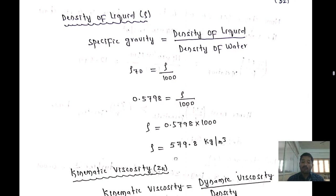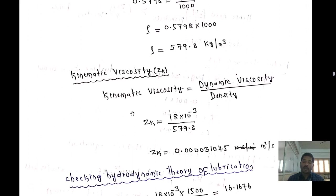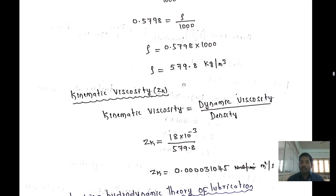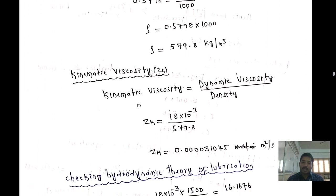To find the kinematic viscosity, use the formula: kinematic viscosity (ν) = dynamic viscosity / density. ν = (18 × 10⁻³) / 579.8 = 0.000031045 m²/s.